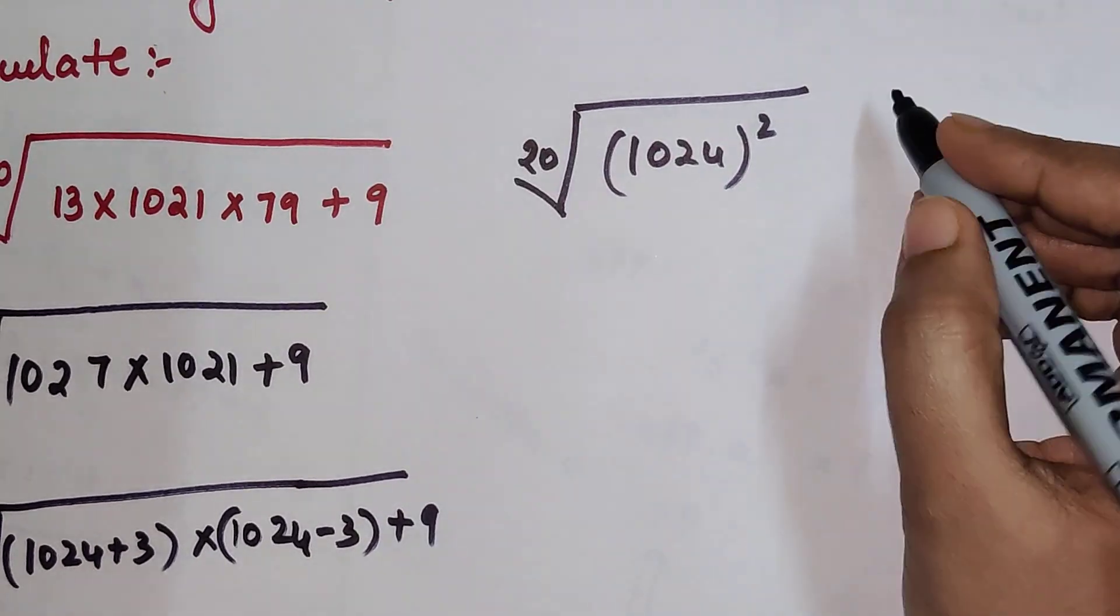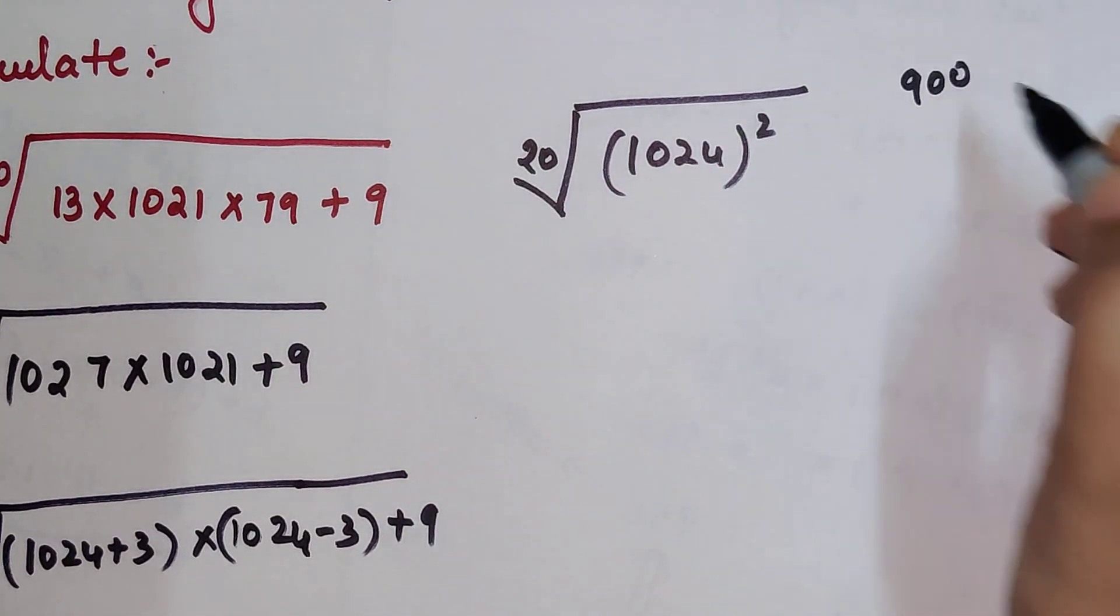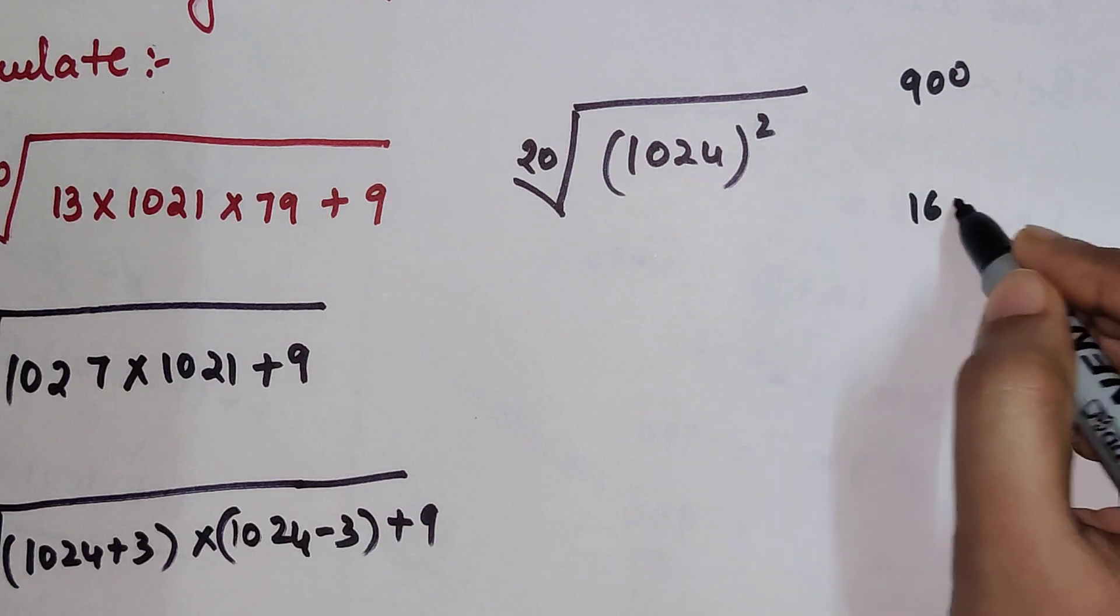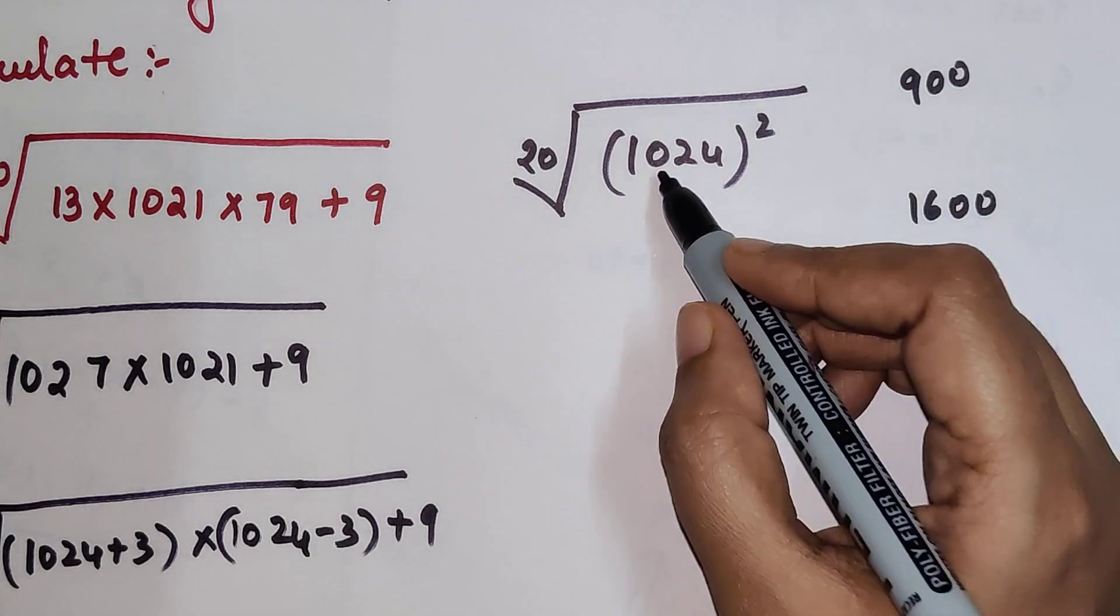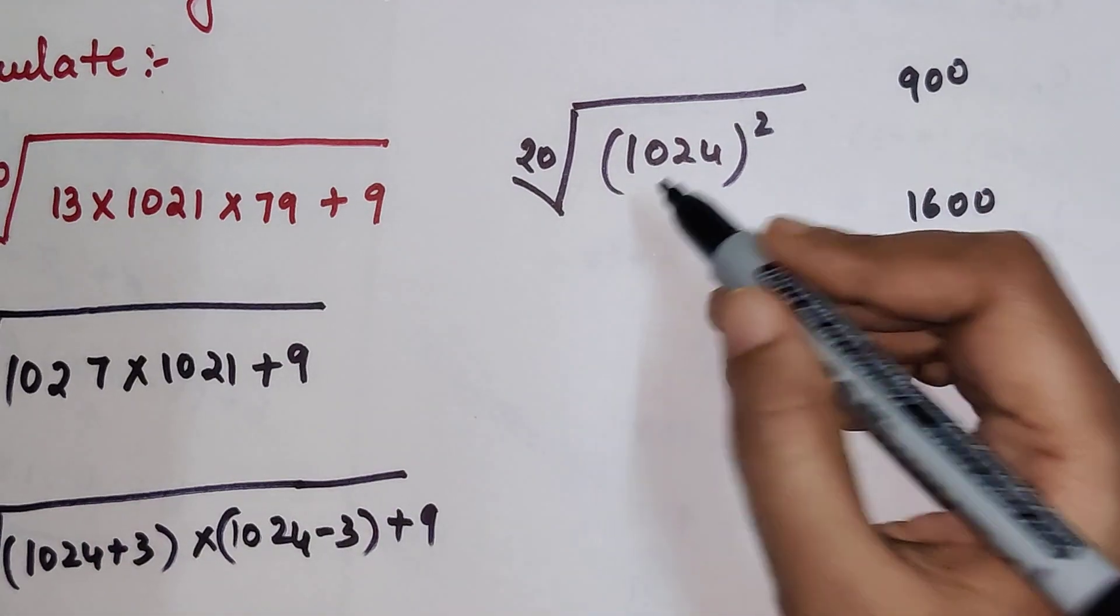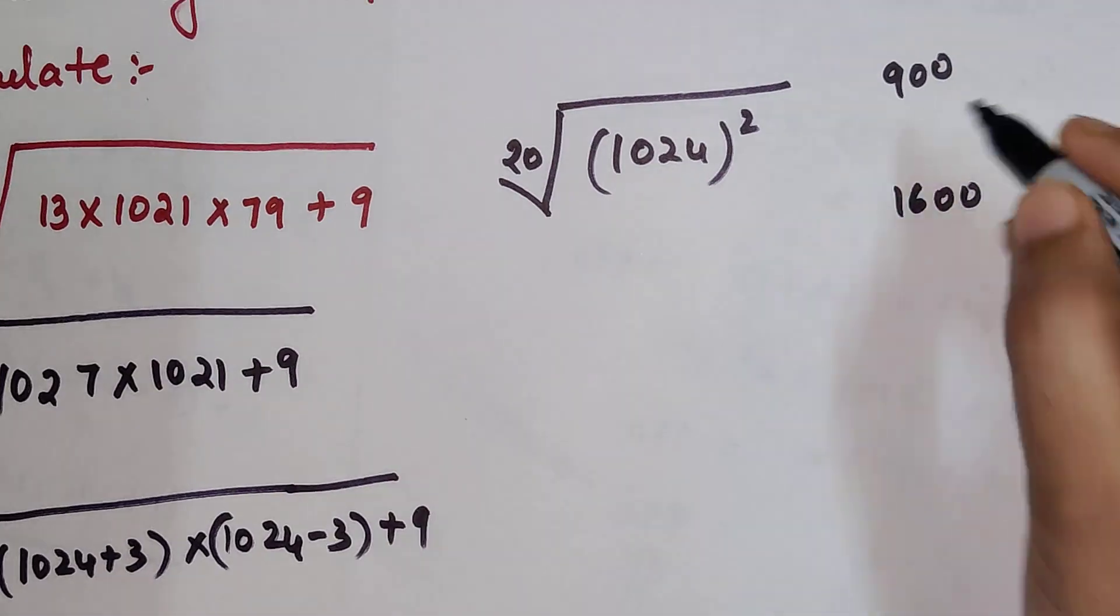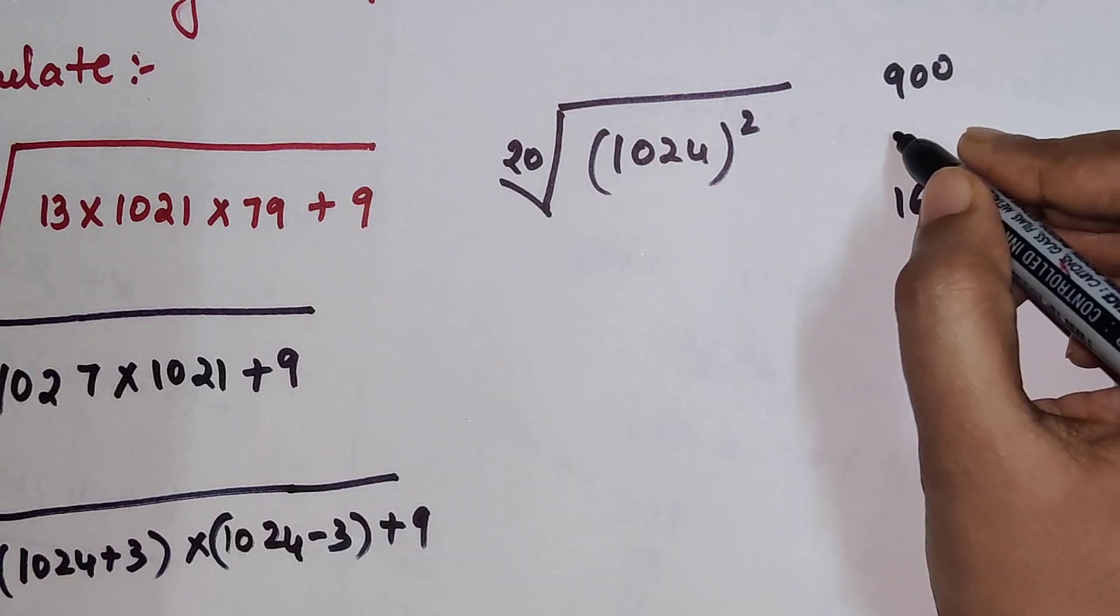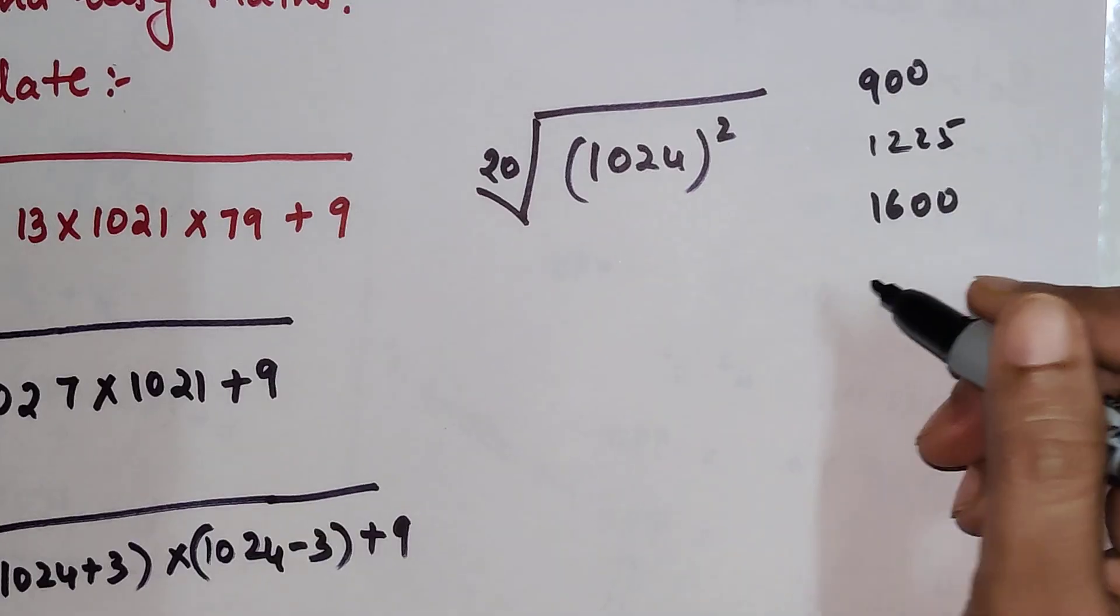Now we know that 30² is 900 and 40² is 1600. So this number will be lying between 30 and 40, something very close to 30 because 35² is 1225. How did I find out?